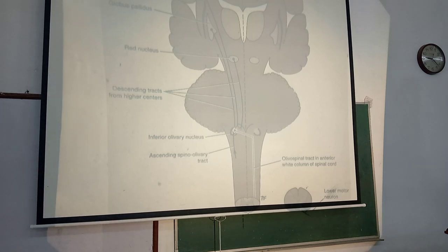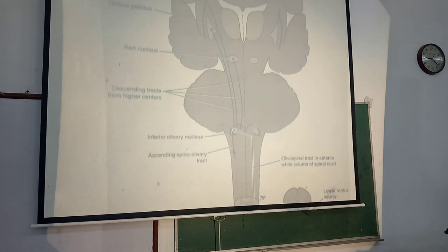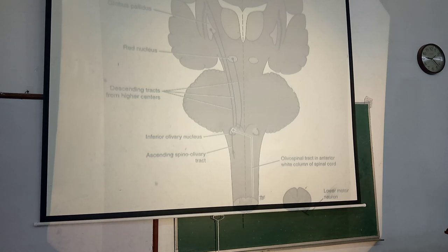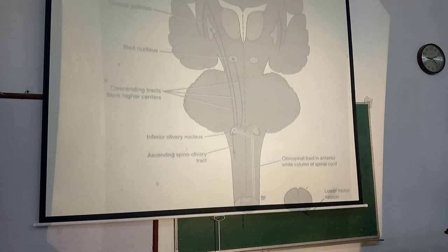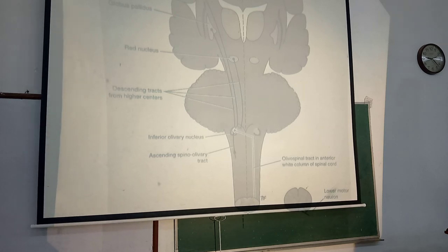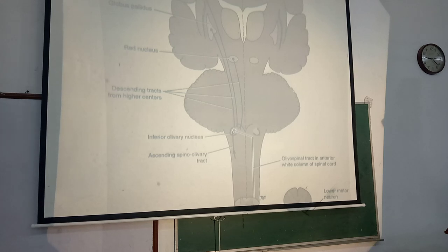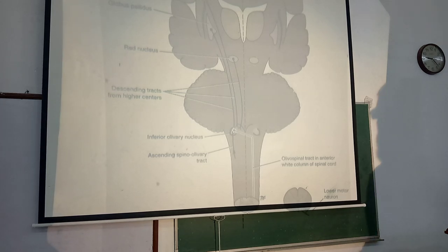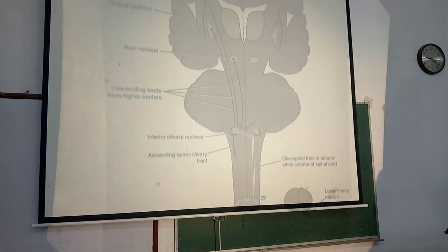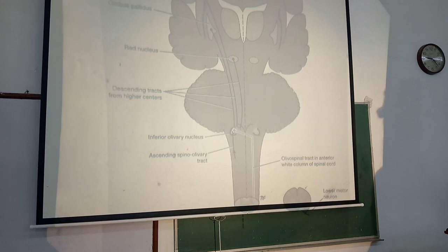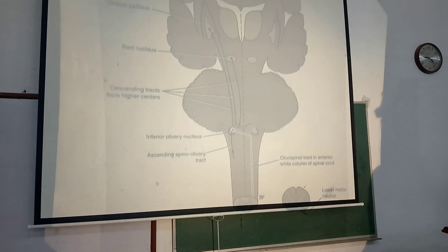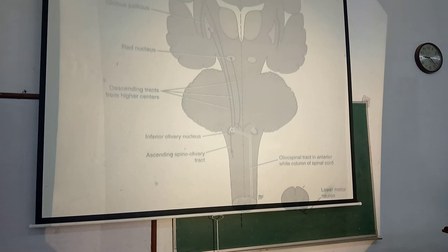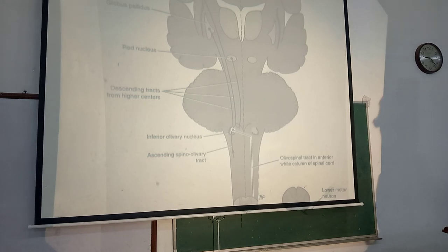The olivospinal tract is also involved in the control of motor activity. Our next descending tract is the descending autonomic pathways.